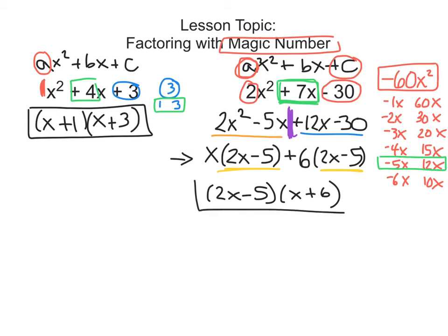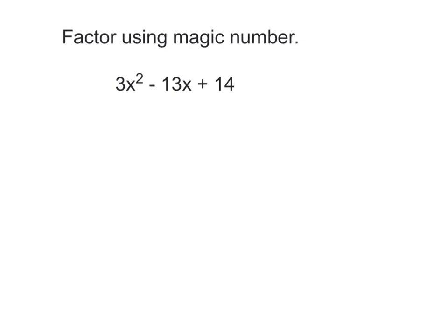I know I walked through that pretty slow — it's almost a 10-minute video already — but that is the process. Notice this x ends up going here, this positive 6 goes right here, and the two factors underlined in yellow is placed out here.